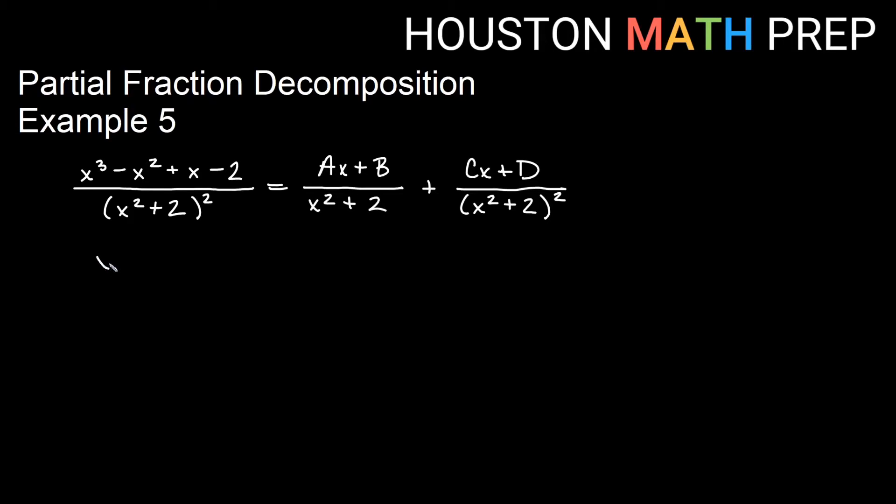If we got a common denominator, then the numerator on the left side wouldn't change. It already has the original denominator, which is our common denominator. This is our common denominator. So the ax plus b only has one copy of x squared plus two underneath it. So if I was getting a common denominator, I would multiply in another copy of x squared plus two into this fraction in order to have a common denominator on the bottom.